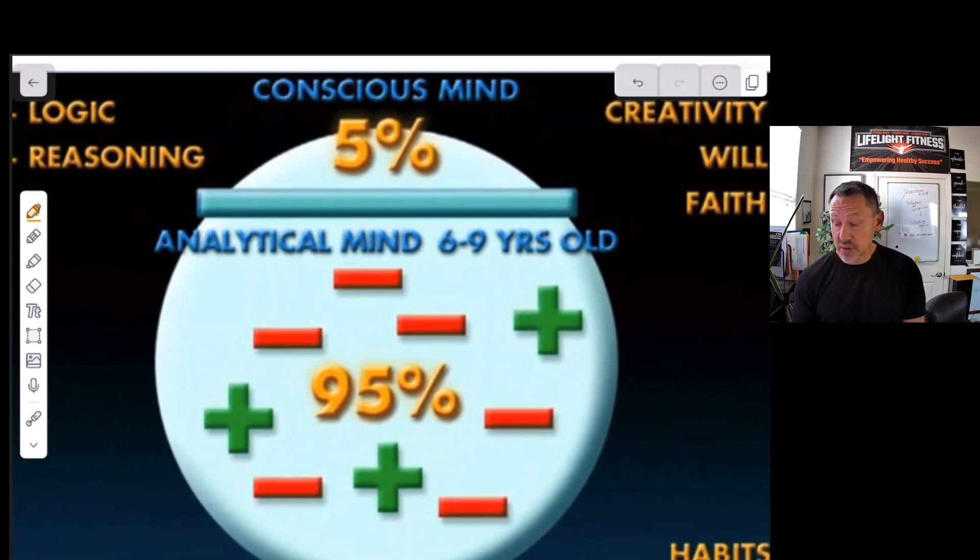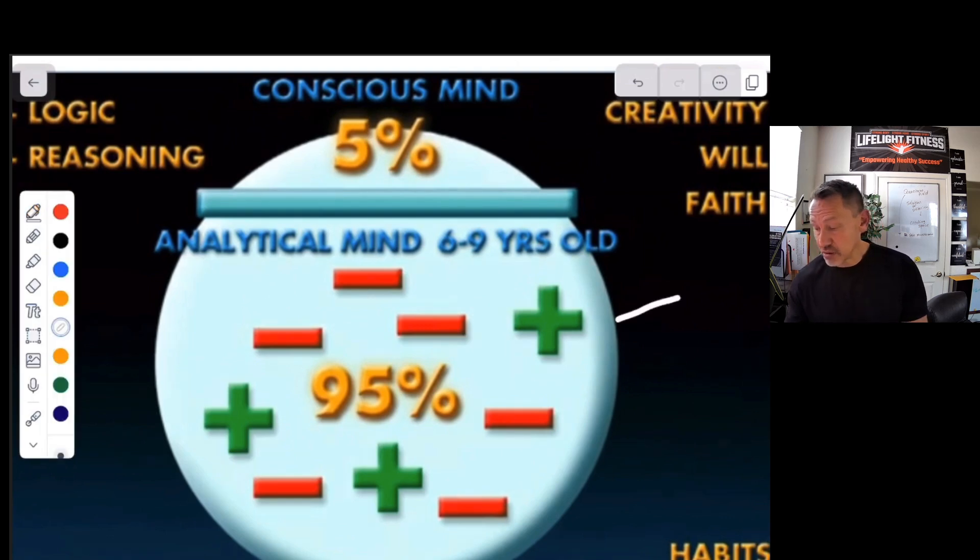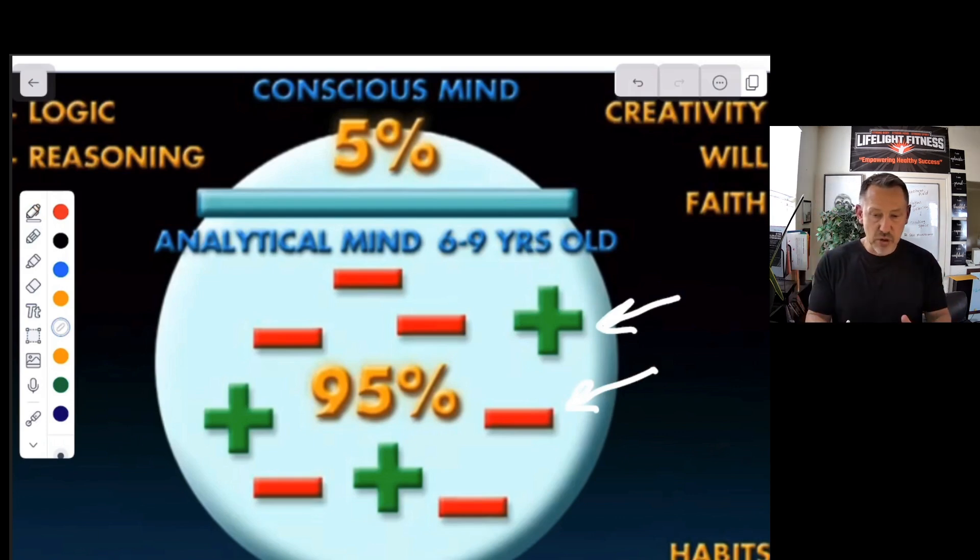In our subconscious mind we have positive programs and we have negative programs. We have positive memories, we have negative memories. When you have that stored emotion with a story around it, it becomes a program. Programs like I'm not good enough, I can't do it, I'm not as good as everyone else, I need to prove myself, I need to please others in order to be loved and accepted. There are programs in our subconscious that have been around since before we were seven.